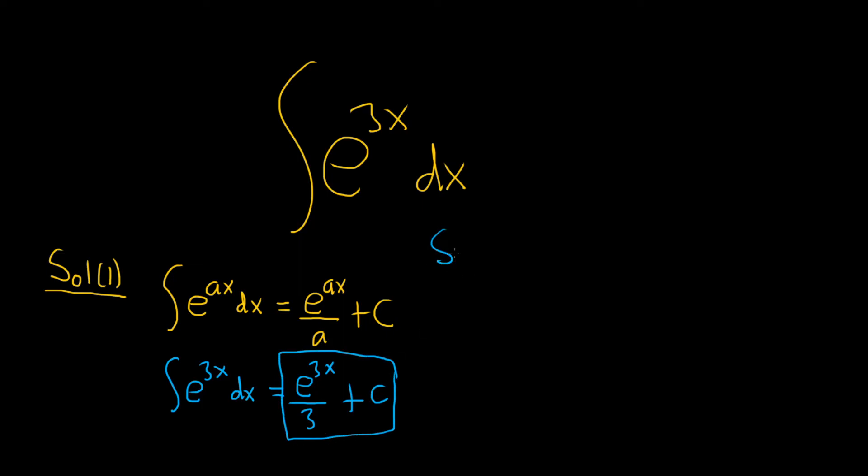The other way to do it involves a technique called u-substitution, so solution two. In this technique, you let u be your inside function, so you let u be equal to 3x.